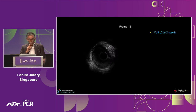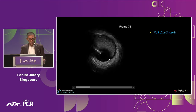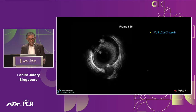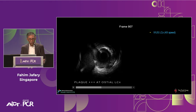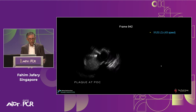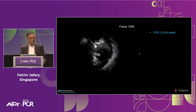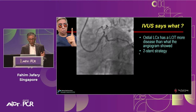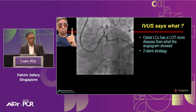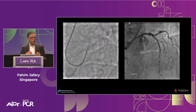However, when you put in IVUS — look at that. The circumflex looks pretty good in the mid-segment, but as you come towards the ostium there's a lot of plaque. Plaque burden at the ostium was over 50%, and at the polygon of confluence there's a lot of plaque, plus left main disease. IVUS revealed the ostial circumflex has far more disease than the angiogram showed. We changed to a two-stent strategy, did a DK crush, and got an acceptable result that looked pretty good on IVUS.